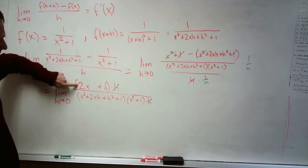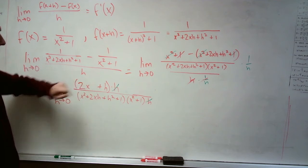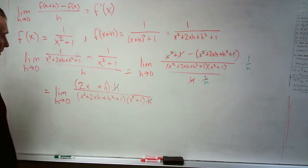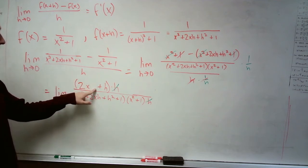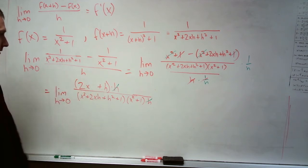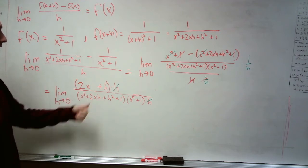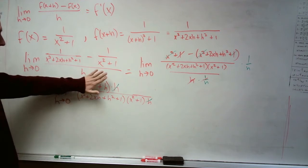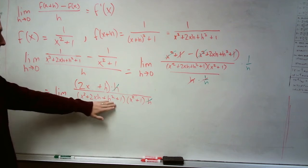a line 2x plus h, right, h is just some number. You can take limits of lines. In fact, they're continuous, they're polynomials. So you can just plug in 0 for h up top here, so we know we can find the limit of the top on its own.